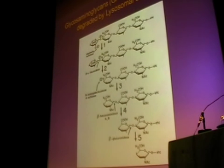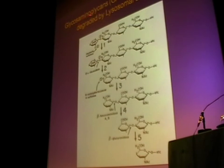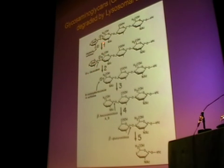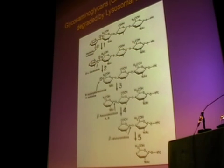The MPS enzymes are responsible for breaking down the mucopolysaccharides, also known as the glycosaminoglycans or GAGs. GAGs are sequentially degraded by a series of lysosomal enzymes. The deficiency of any one of those stops the degradation and causes the accumulation of the remaining GAG.